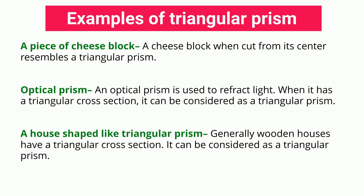A house shaped like a triangular prism: generally wooden houses have a triangular cross-section and can be considered as a triangular prism.